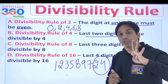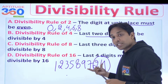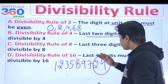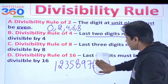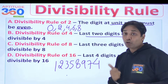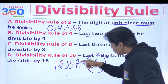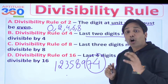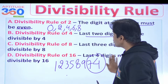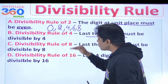For the divisibility rule of 4, you have to look at the last 2 digits — that's it, nothing else, even if the number is very huge. What if the last 2 digits are 74? Then it is no longer divisible by 4, because 74 is not divisible by 4. So the divisibility rule of 4 says the last 2 digits must be divisible by 4.